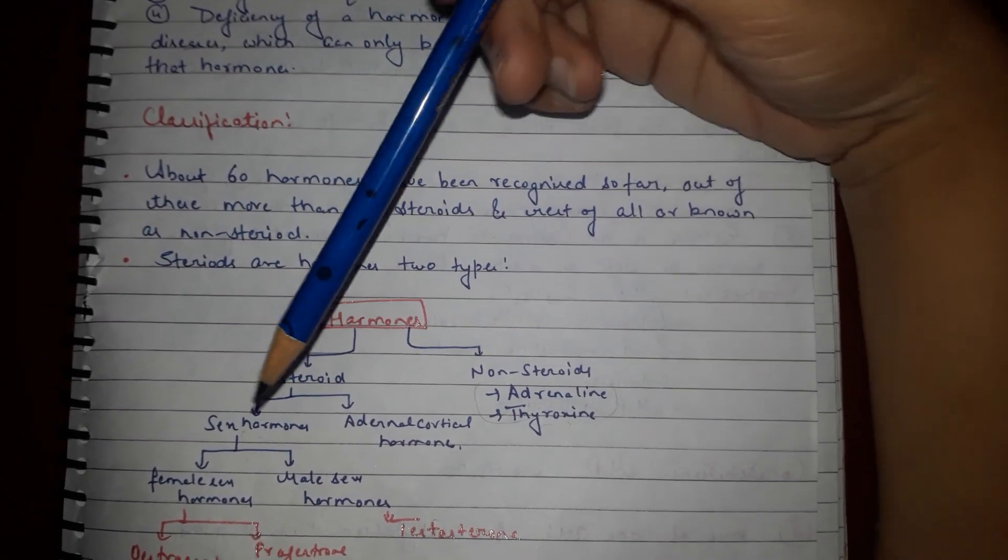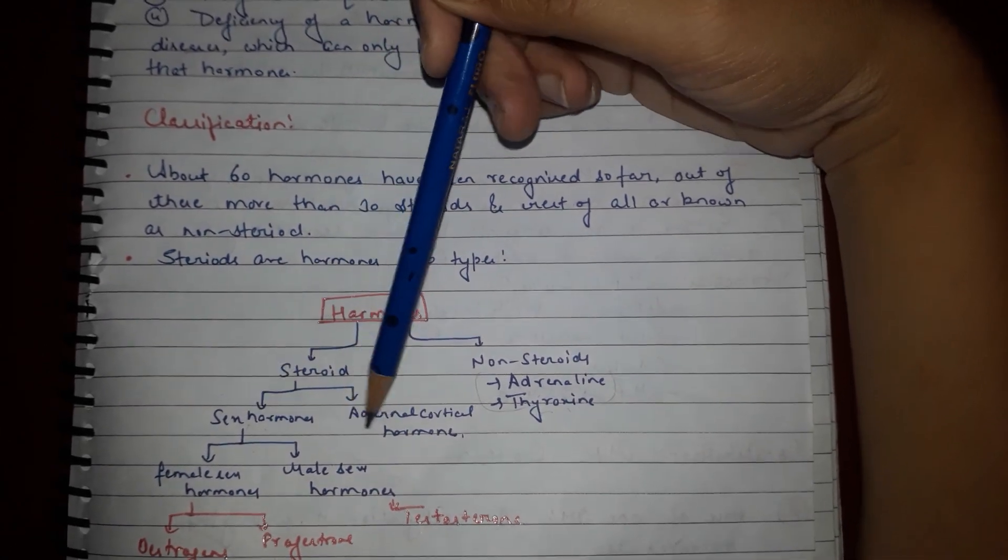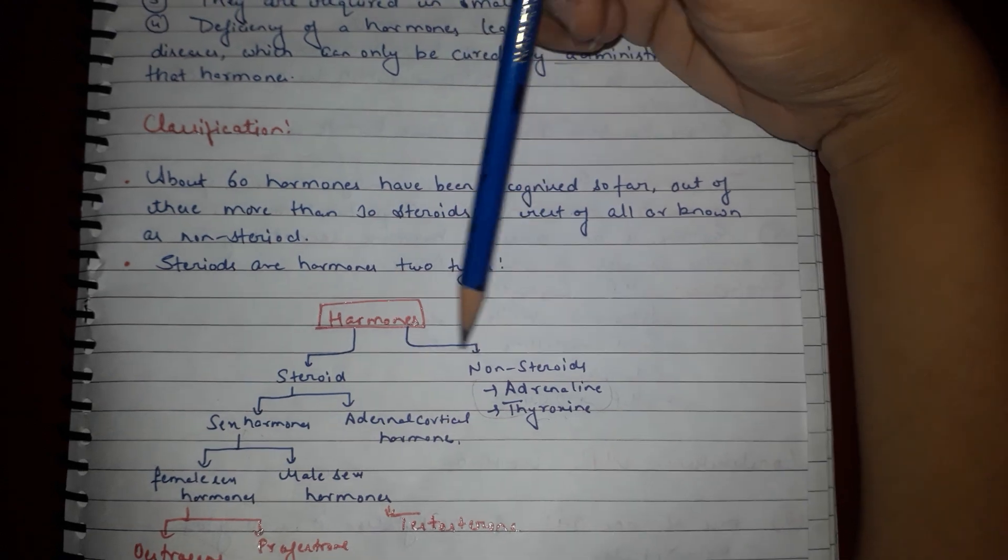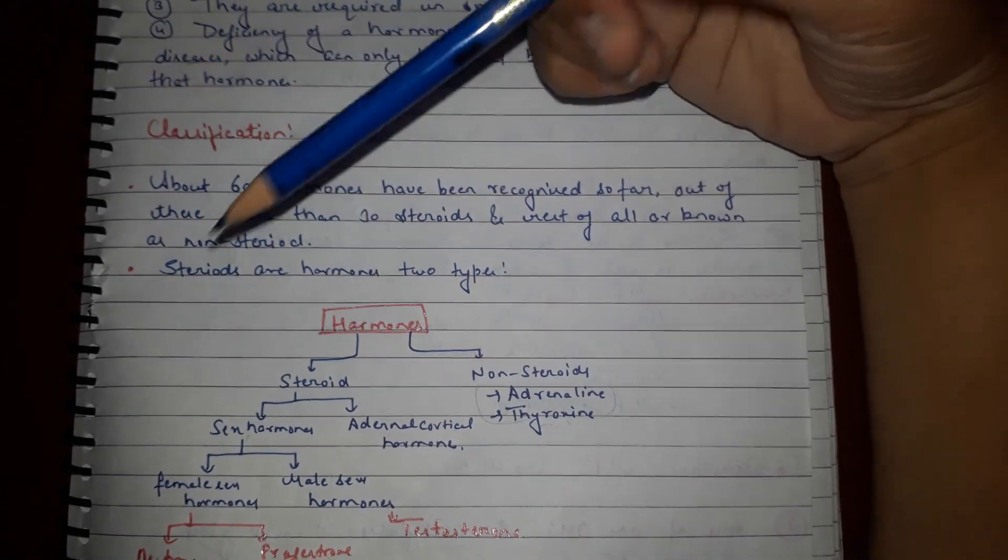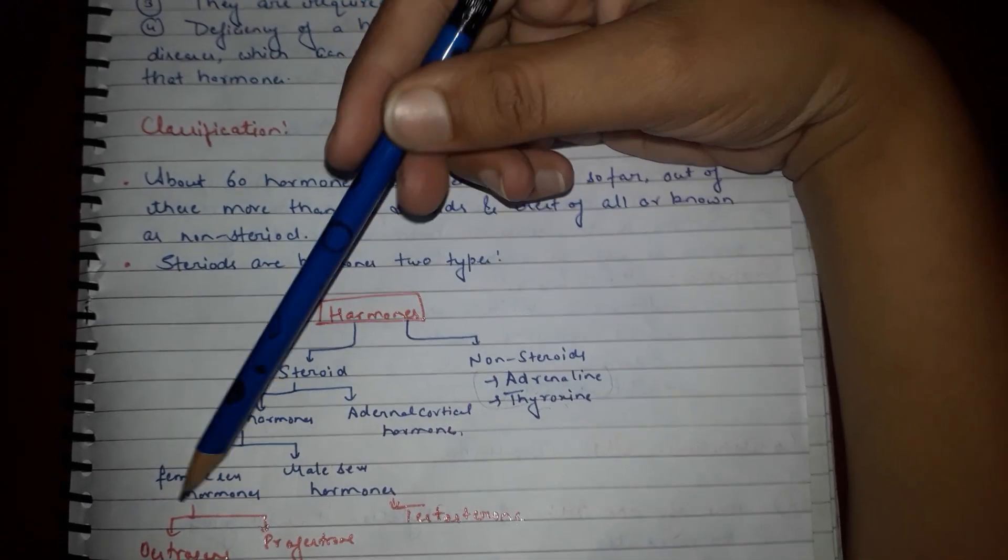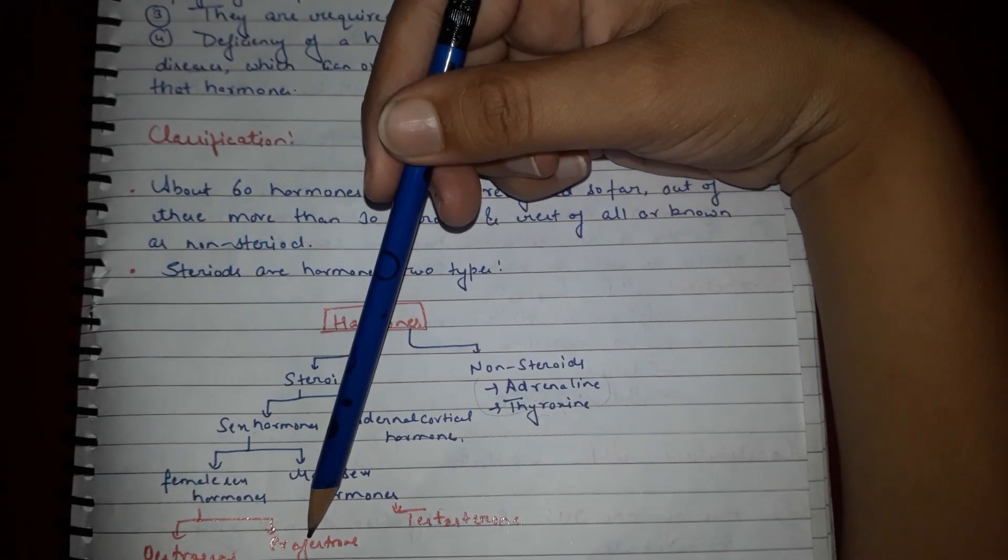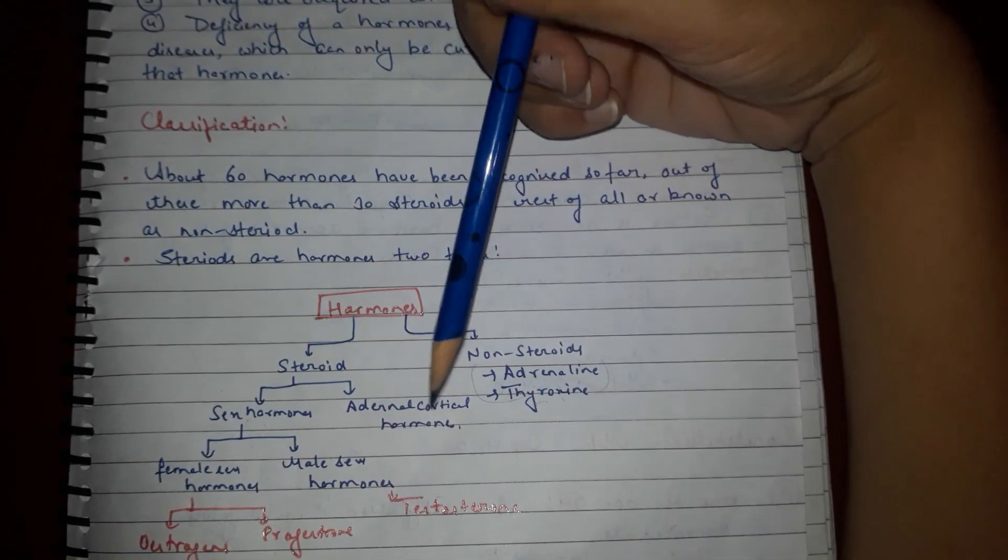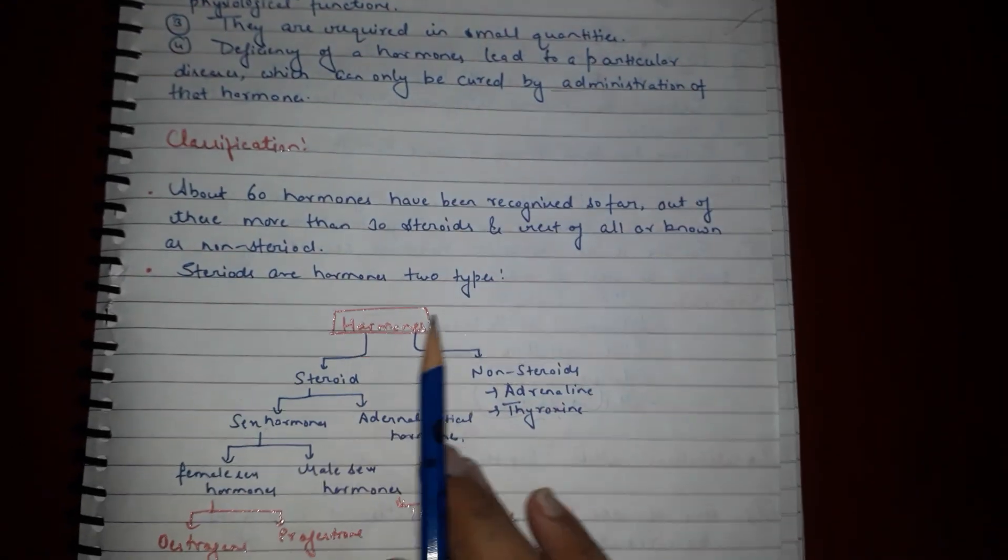Steroid hormones are of two types: sex hormones and adrenal cortical hormones. Non-steroids include adrenaline and thyroxine. Sex hormones include female sex hormones estrogen and progesterone, and male hormone testosterone.